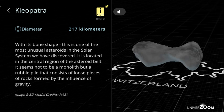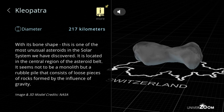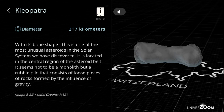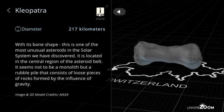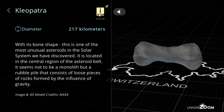Kleopatra, diameter: 217 kilometers. With its bone shape, this is one of the most unusual asteroids in the solar system we have discovered. It is located in the central region of the asteroid belt. It seems not to be a monolith but a rubble pile that consists of loose pieces of rocks formed by the influence of gravity.